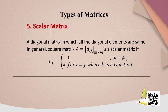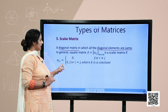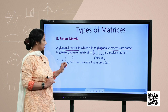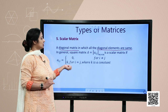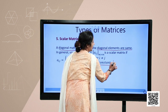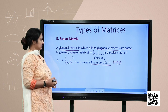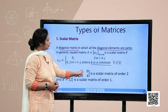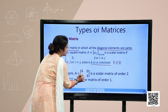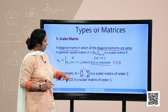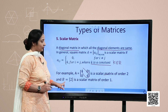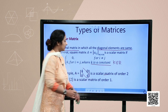The next type is the scalar matrix, which is also a type of diagonal matrix, but all the diagonal elements must be the same. A square matrix A = [a_ij]_{m×m} is a scalar matrix if a_ij = 0 for i ≠ j, and a_ij = k (a constant, k ∈ ℝ) when i = j. For example, the matrix [[4, 0], [0, 4]] has equal diagonal elements 4 and 4, so it is a scalar matrix of order 2, while B = [2] is a scalar matrix of order 1.